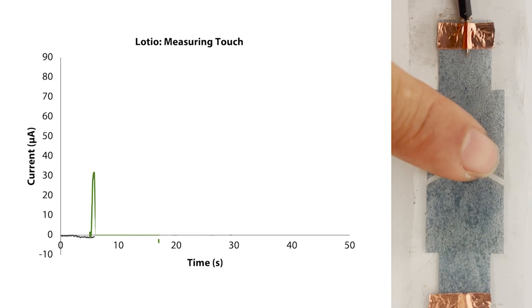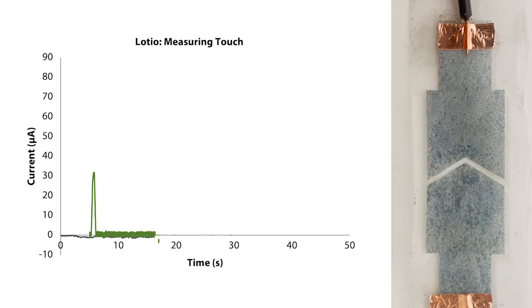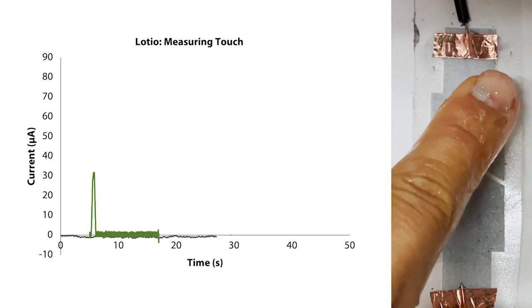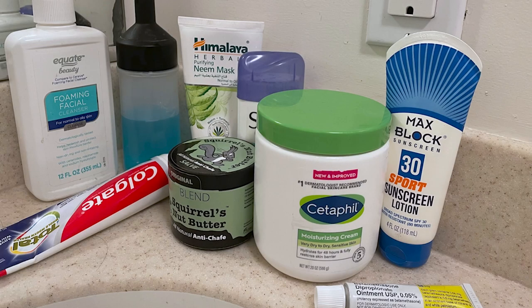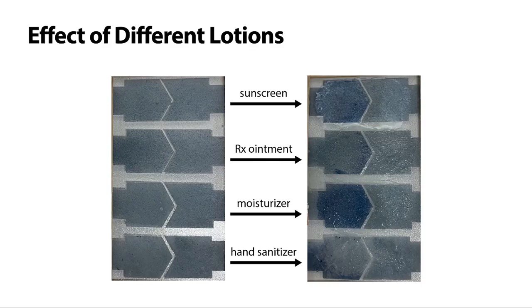Lotio can also detect touch events, as well as the application of lotion. We use many different kinds of lotions and creams for various purposes. Lotio responds differently to different kinds of lotion, such as sunscreen, medicated ointment, moisturizer, and hand sanitizer. This is a property that can be both visually observed and sensed digitally.